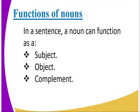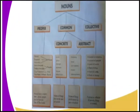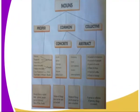In a sentence, a noun can function as either a subject, the object, or a complement. As you can see from the diagram, those are the common types of nouns. And if you can define, you can say a noun is a naming word of a place, person, or a thing.